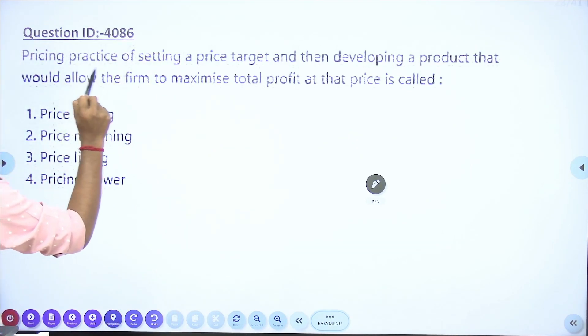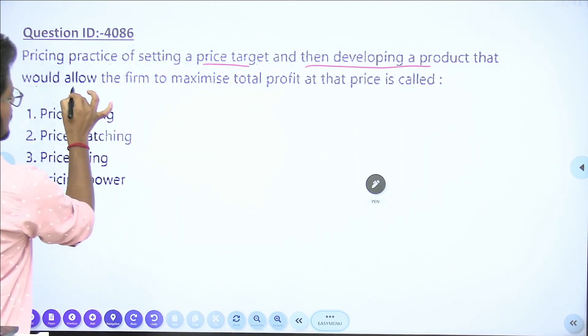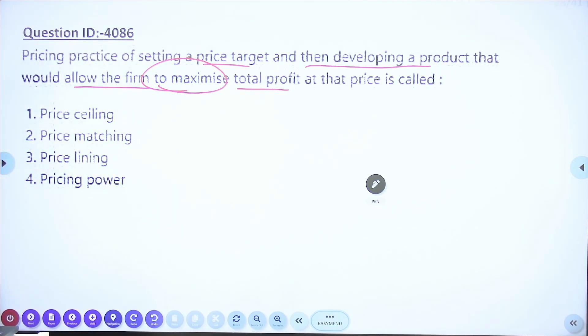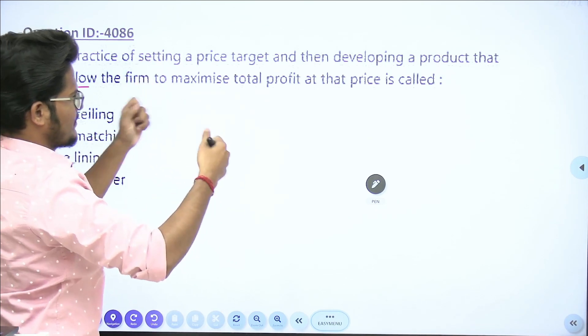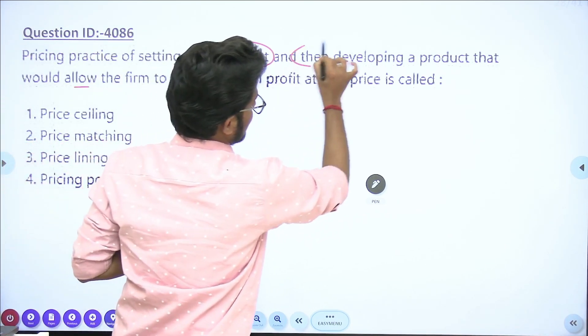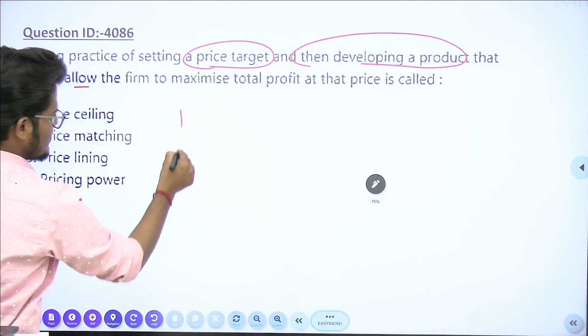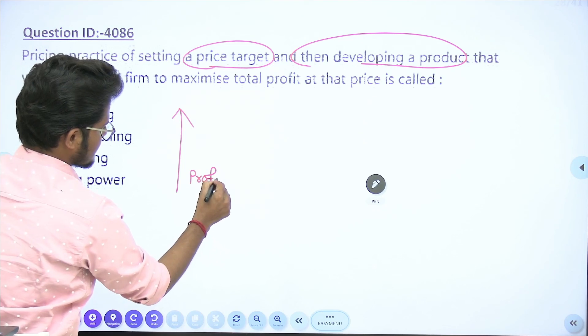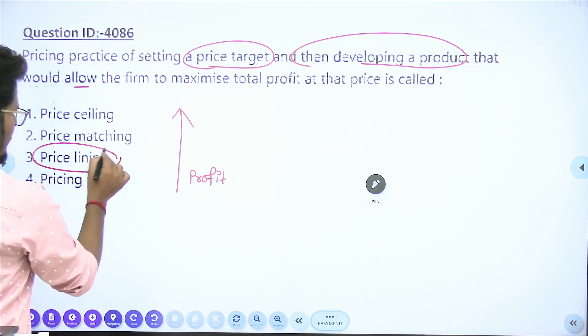Let us start with question number 1. The pricing practice of setting a price target and then developing a product that would allow the firm to maximize total profit at that price. Options are price ceiling, price matching, price lining, and price power. The answer is price lining.